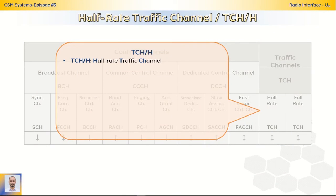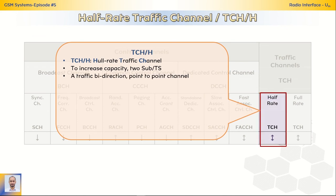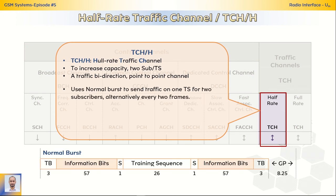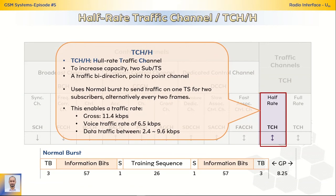The half-rate traffic channel is used to increase capacity by allowing access for two subscribers in the same time slot. Like the full-rate channel, it is a bidirectional point-to-point channel. It also uses the normal burst to send traffic on one time slot for two subscribers, alternatively every two frames. This enables a traffic rate of 11.4 kbps gross 6.5 kbps for voice traffic, and between 2.4 to 9.6 kbps for data traffic.